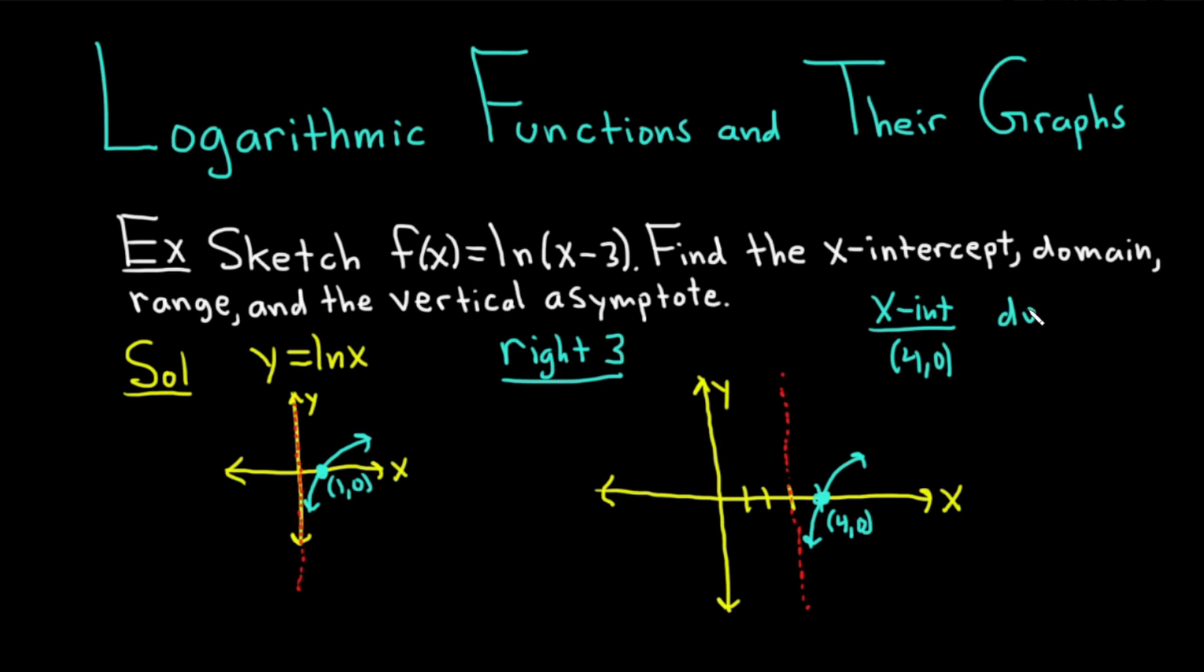The domain is all of the x's that you can plug in that makes sense. In other words, they give you y values. So it looks like there's nothing over here on the left, so we start at 3. It would be 3 to infinity. And because we have an asymptote, we don't include the 3. So parentheses 3 to infinity.